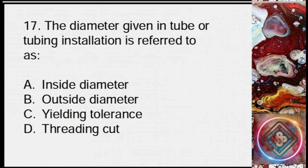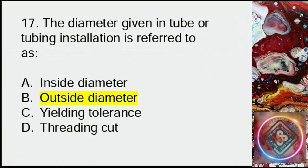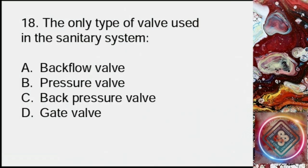Question 17: The diameter given in tube or tubing installation is referred to as: A: Inside diameter, B: Outside diameter, C: Yielding tolerance, D: Threading cut. Answer: B, outside diameter.